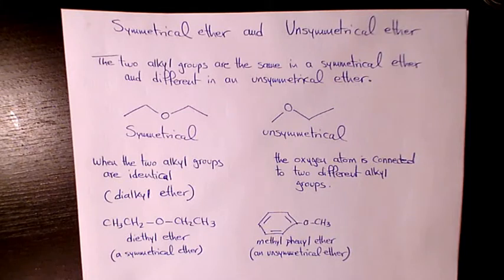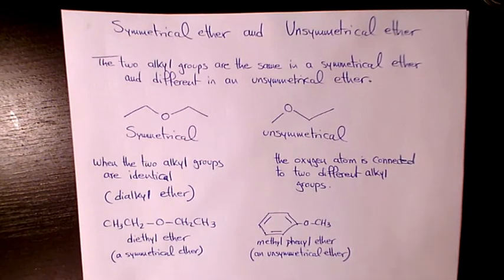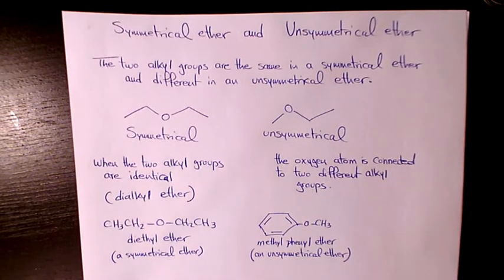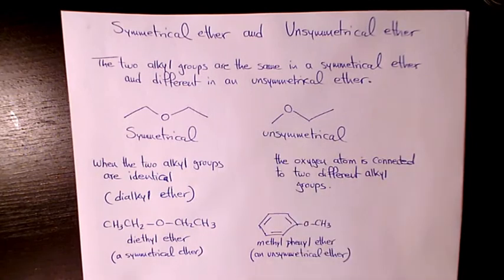In ethers, the two alkyl groups are connected to each other through an oxygen atom. If these two alkyl groups are the same, we call it symmetrical. If they are not the same and are different, we call it unsymmetrical ether.